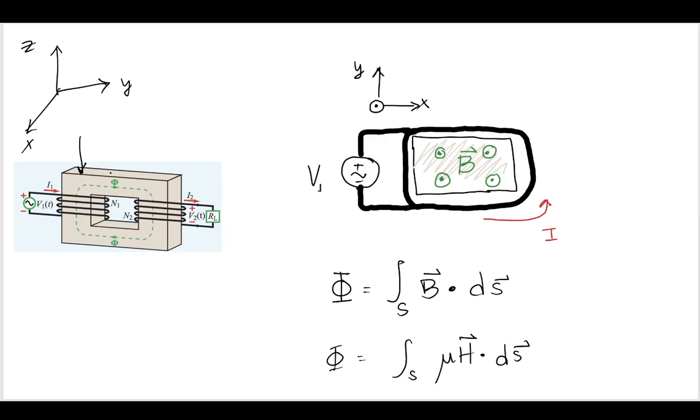The flux that these two are linked by is going to be related to that magnetic flux density dotted with a surface area, and that surface area is what is going to cover this entire transformer that the windings are around.